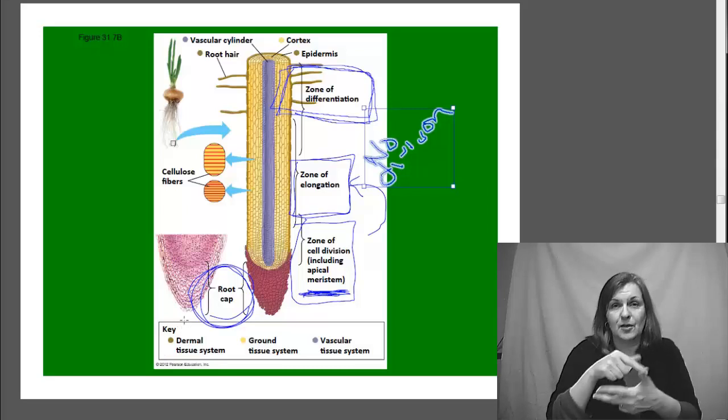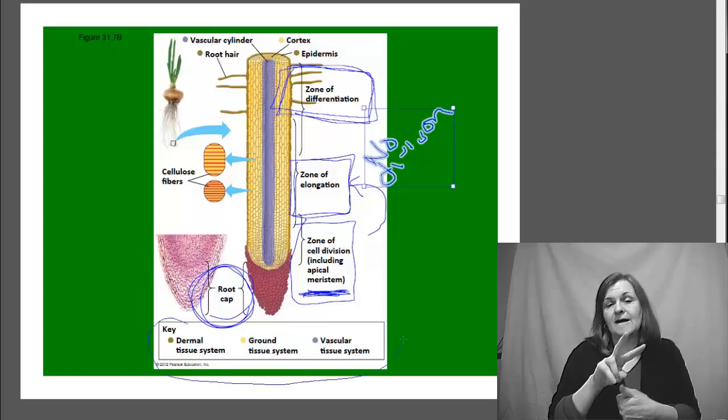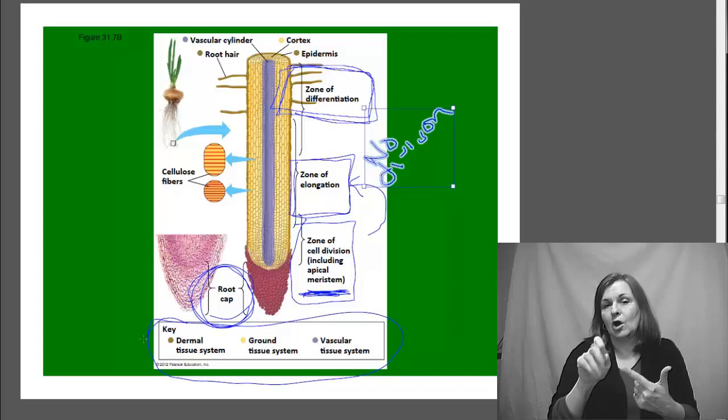Again, bringing back our three types of tissue, vascular, ground, and dermal are all present in the root as well.